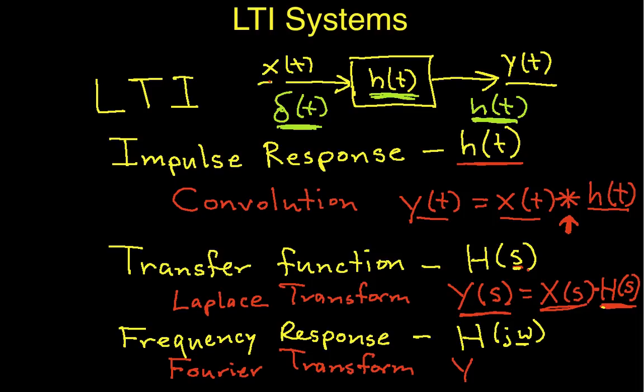And the way this works, Y of J omega is equal to X of J omega H of J omega. So basically, the Fourier transform of the output is equal to the Fourier transform of the input times the frequency response. And you'll notice that Y of S, or the relationship for the Laplace transform, looks the same as for the Fourier transform, except S is replaced by J omega. That's because I can compute a Fourier transform from a Laplace transform by replacing S by J omega. The Laplace transform and Fourier transform are very closely related.